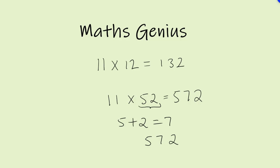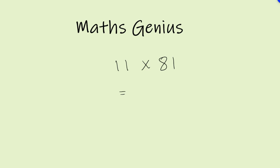Let's try another example. 11 times by 81, what's the answer? 3, 2, 1. You're still thinking again. Well anyway, I'll tell you what to do. Put the 8 and 1 on two sides and add 8 and 1 together. That gives you 891, as simple as that.